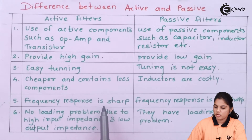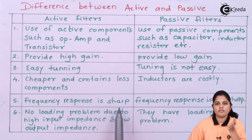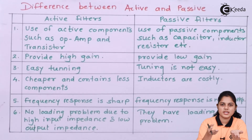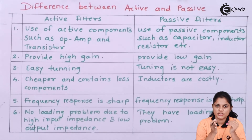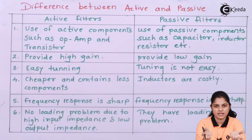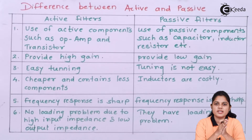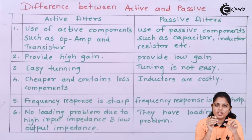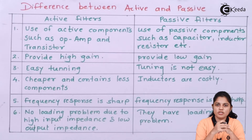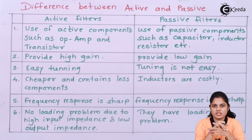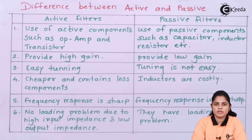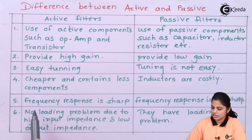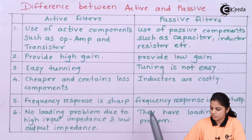Fifth difference: in active filters, the frequency response is sharp. Just as op-amps have ideal and practical characteristics, filters have ideal and practical frequency responses. A sharp frequency response means if a particular cutoff frequency is specified, the filter stops precisely at that frequency. Active filters provide a sharp response, whereas in passive filters, the frequency response is not sharp.